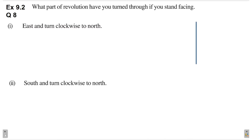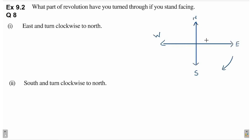Toh pehle hum aise directions draw ker lete hain. This is the north direction, this is the east direction, this is the south direction, this is the west direction. Question mein diya hai ki east facing se start karke clockwise direction mein jaana hai. Clockwise direction ka kya matlab hota hai? Is direction mein jaana, kyunki clock aapka isi direction mein chalta hai. So currently east facing hai and clockwise direction mein turn karte north facing tak jaana hai.